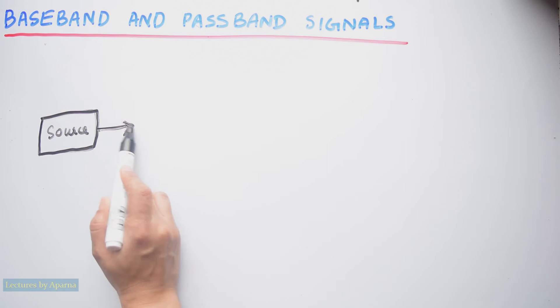If the baseband signal is transmitted directly then it is known as baseband transmission. So baseband transmission will not use any modulators or demodulators.